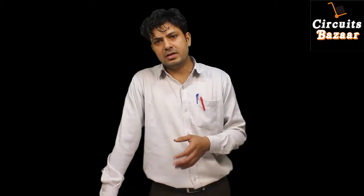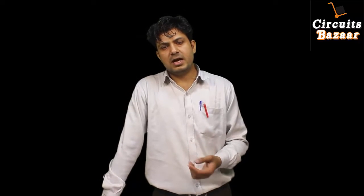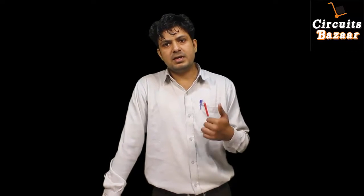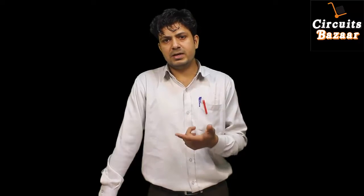Hello guys, thank you so much for watching. Today we are going to study an omnipresent electronic and electrical component called a resistor. A resistor is further divided into fixed resistor and variable resistor. Variable resistors are further divided into two categories: preset, also called potentiometer, and rheostat. Rheostat is also divided into two further categories: linear rheostat and rotary rheostat.